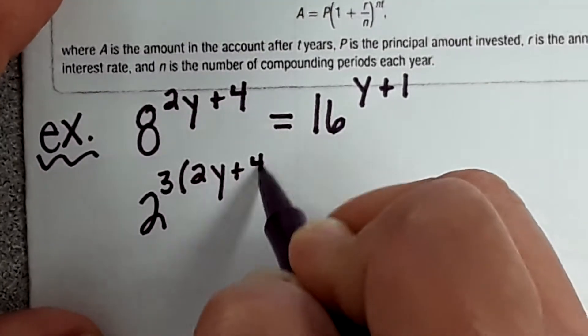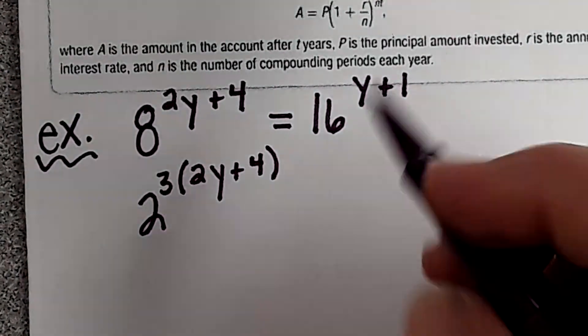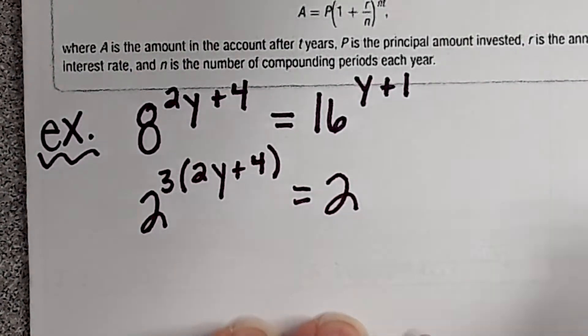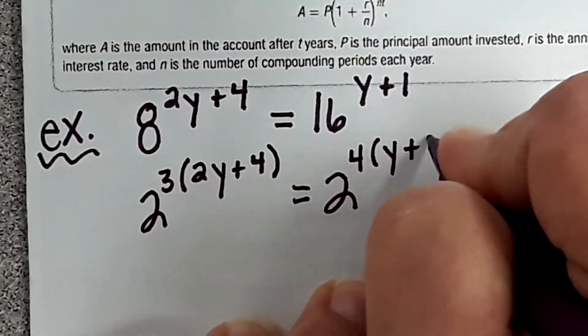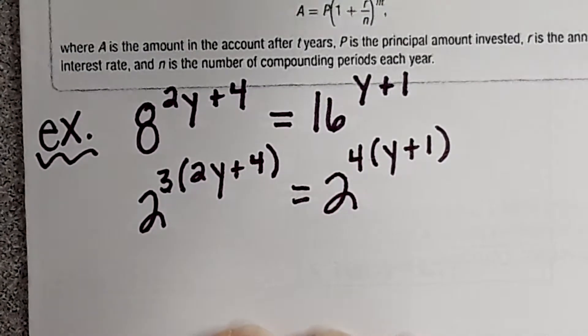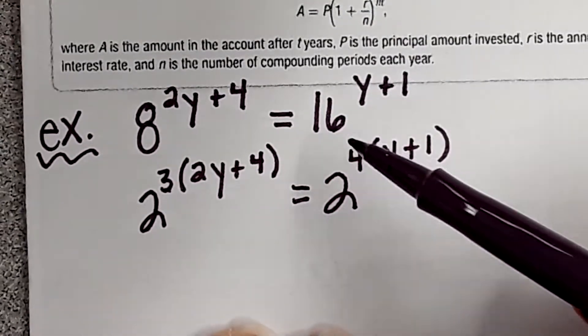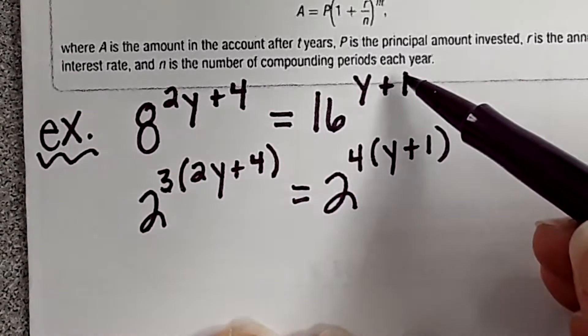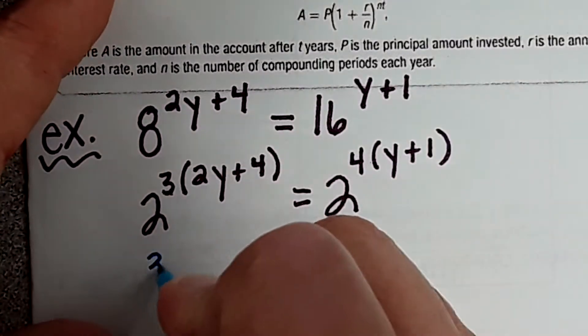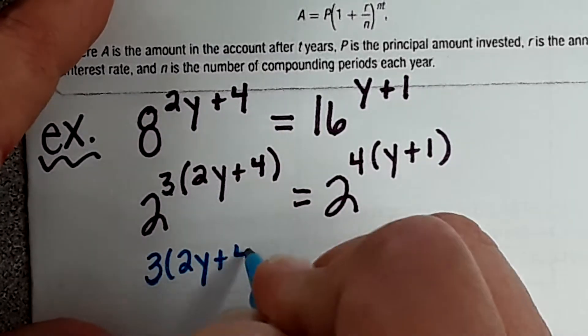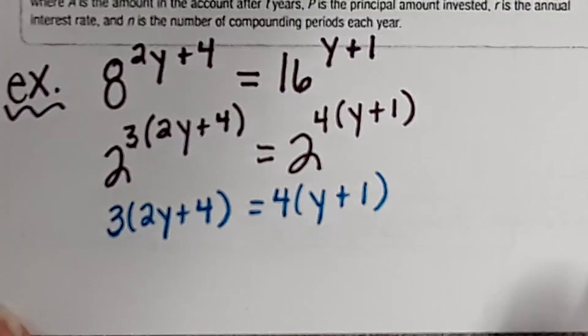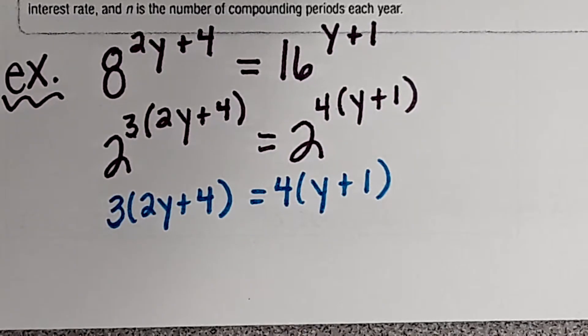This is why I gave you that power sheet, so you guys could practice. Now I'm going to rewrite 16 as 2. How many 2's do I need to get 16? 4. So the 3 comes from 2 to the third is 8. 2y plus 4 was the original exponent. 2 to the fourth comes from 16. Now the bases are the same, so I'm going to rewrite it as 3 times (2y plus 4) equals 4 times (y plus 1).